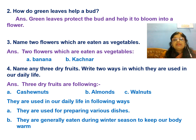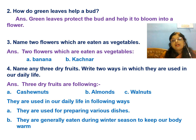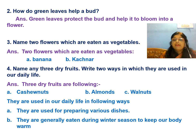Fourth question: name any three dry fruits and write two ways in which they are used in our daily life. Three dry fruits are cashew nuts, almonds, and walnuts. You can see them in your kitchen. They are used for preparing various dishes, and they are generally eaten during winter season because such food keeps us warm.